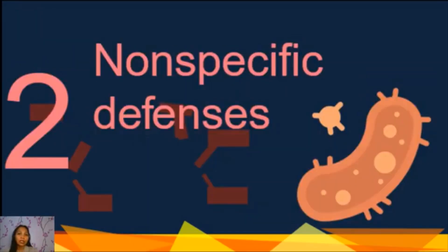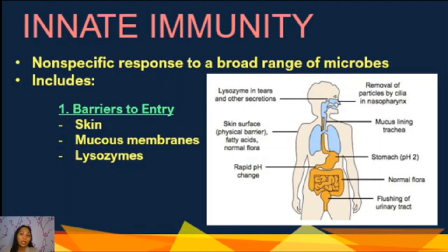The first part of the immune system is the non-specific defenses. Innate immunity, or innate defenses, are non-specific and act early. This includes many external and internal components. This arm of the immune system is non-specific because it acts against any type of invader.